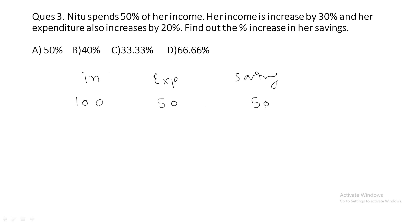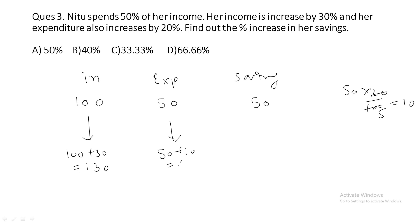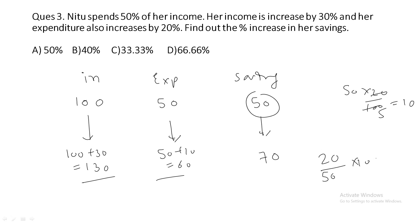Her income increases by 30 percent, so new income is 130. Expenditure increases by 20 percent: 20 percent of 50 is 10, so new expenditure is 60. New saving is 130 minus 60, which is 70. The increase in saving is 20 rupees. So percent increase in saving is 20 upon 50 into 100, which equals 40 percent.